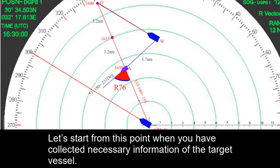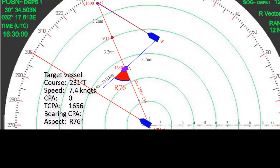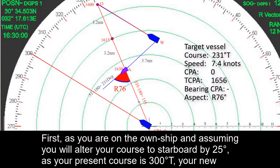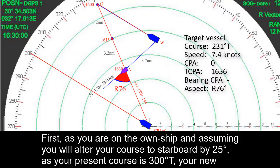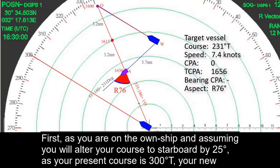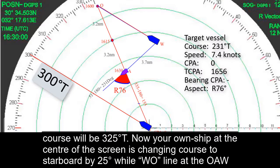Let's start from this point when you have collected necessary information of the target vessel. First, as you are on the own ship and assuming you will alter your course to starboard by 25 degrees. As your present course is 300 degrees true, your new course will be 325 degrees true.